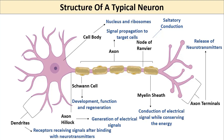You then pass the signal to the next cells with the help of axon terminals, which release neurotransmitters using calcium-dependent vesicles. To prevent loss of signal or energy, the myelin sheath — a modified membrane — is used.